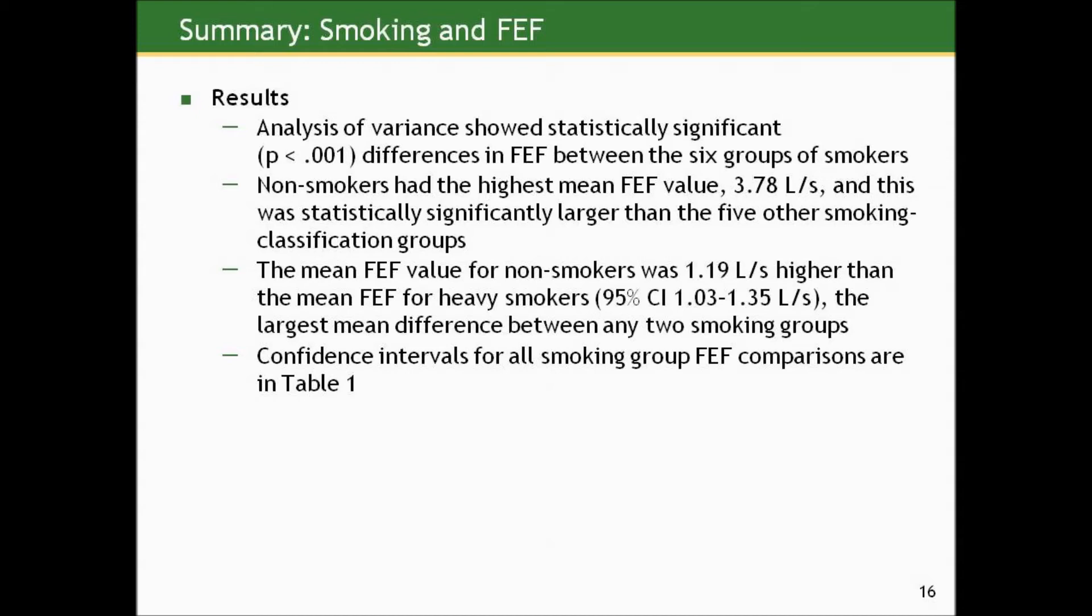The mean FEF value for non-smokers was 1.19 liters per second higher than the mean FEF for heavy smokers. Here's a 95% confidence interval. And this was the largest mean difference between any two smoking groups. It's another piece of information amongst the six groups: where was the largest discrepancy in combinations of groups? Then I say confidence intervals for all smoking group FEF comparisons are in table one. And that's not true. There's no table one to show you. But if you were interested, you have all the data to create one.